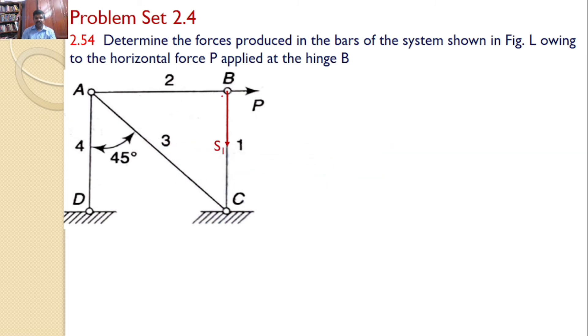Let us consider hinge B. The various forces acting at B are the applied force P, next the force in bar BC, and initially we will assume that it is a tensile force. So we are assuming S1 is away from the point, that is S1, and force in bar 2, that is S2.